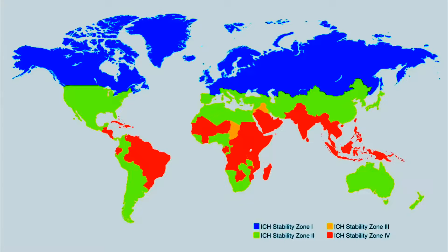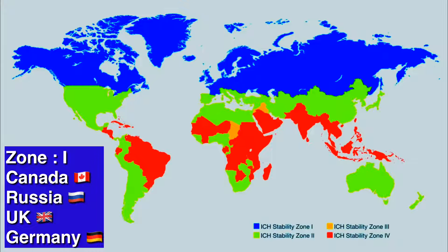Now we will look at various countries and their climatic zones. On screen, there is a colored world map with four different colors: blue, yellow, light yellow, and red. Countries in Zone 1 are shown in blue — most countries of Europe, Canada, Russia, and the UK fall under Zone 1.